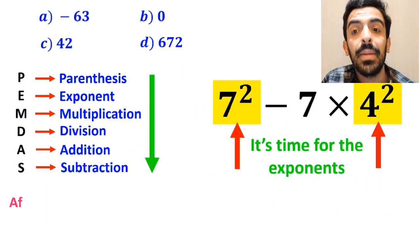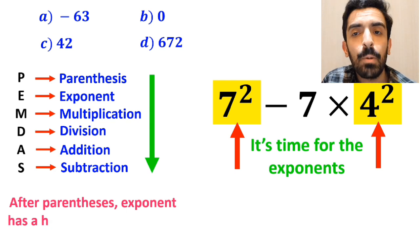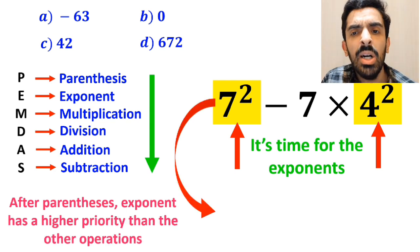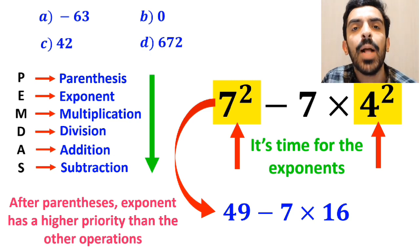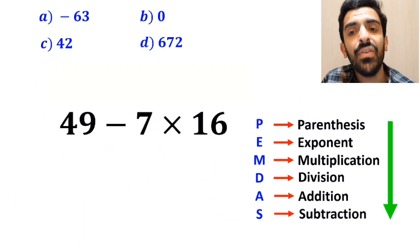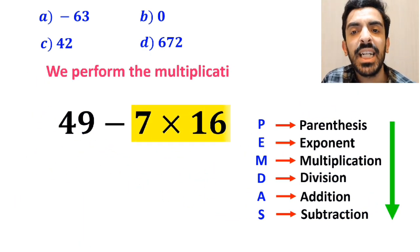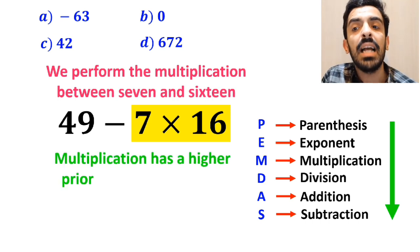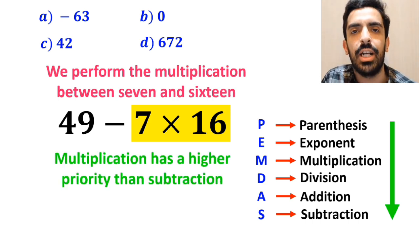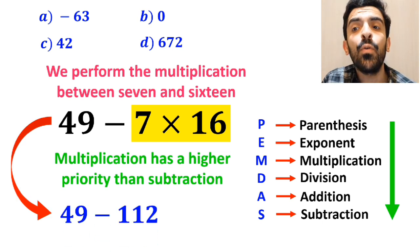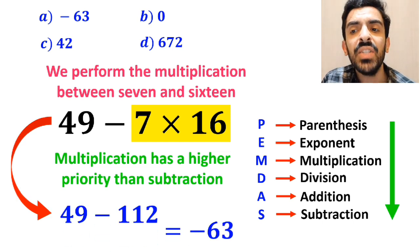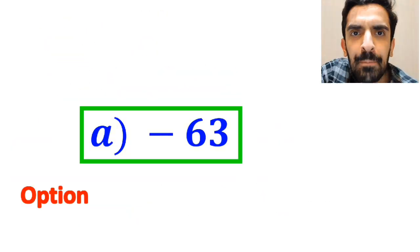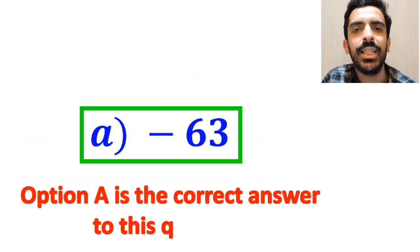Now it's time for the exponents, because after parenthesis, exponents have a higher priority than the other operations. So we rewrite this expression as 49 minus 7 multiplied by 16. In the final step, we perform the multiplication between 7 and 16, because multiplication has a higher priority than subtraction. And this expression becomes 49 minus 112, which finally gives us the answer negative 63. Therefore, option A is the correct answer to this question.